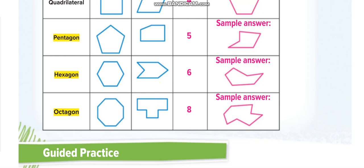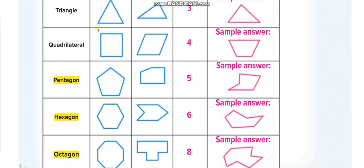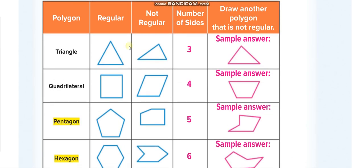Here is another example: draw a polygon that is not regular. So a polygon with three sides is a triangle, with four sides a quadrilateral, with five sides a pentagon, with six sides a hexagon, and with eight sides an octagon. We have to memorize these. If all the lengths are the same, we call it regular; if different, we call it not regular.